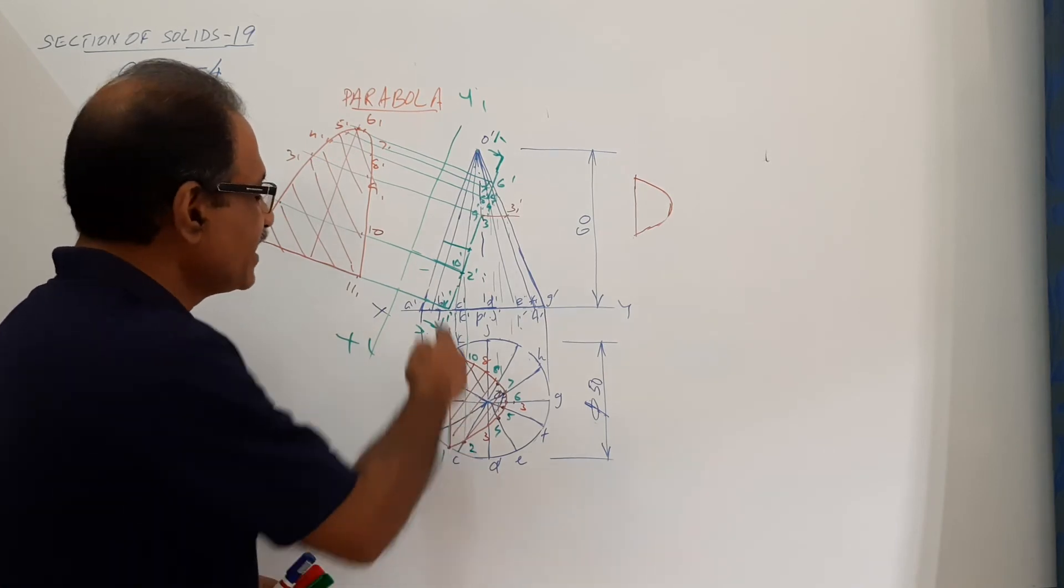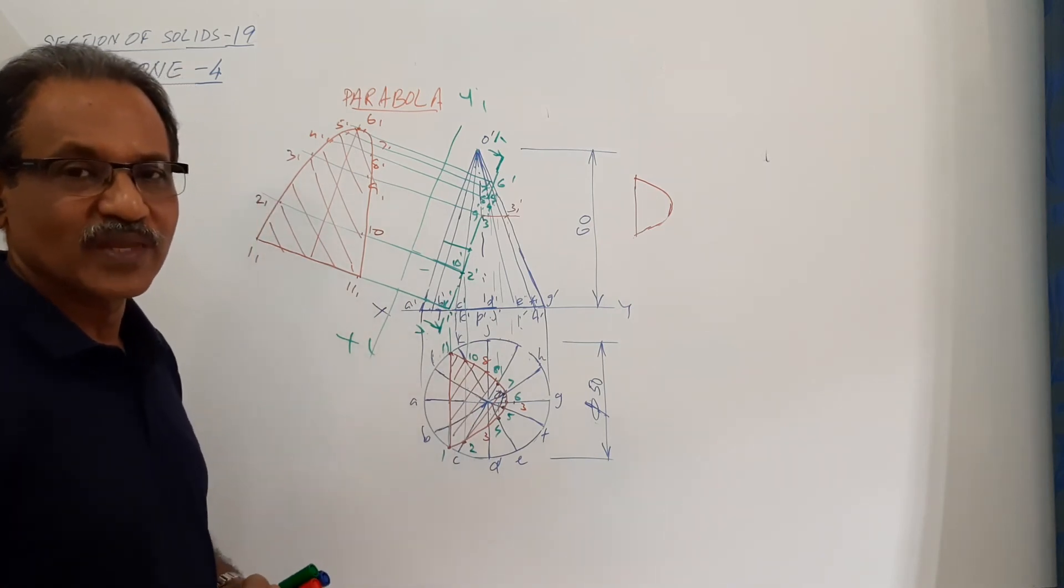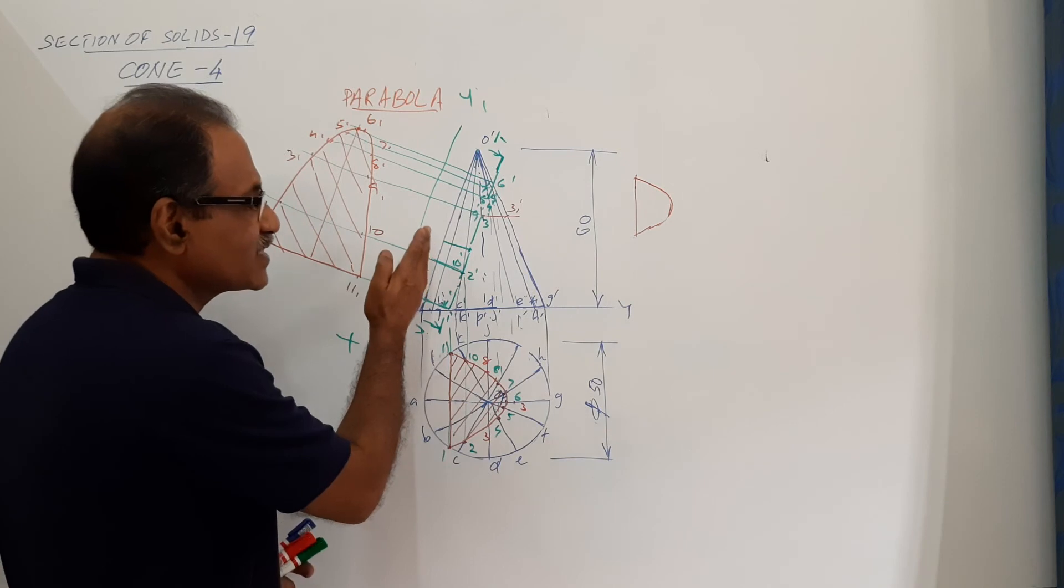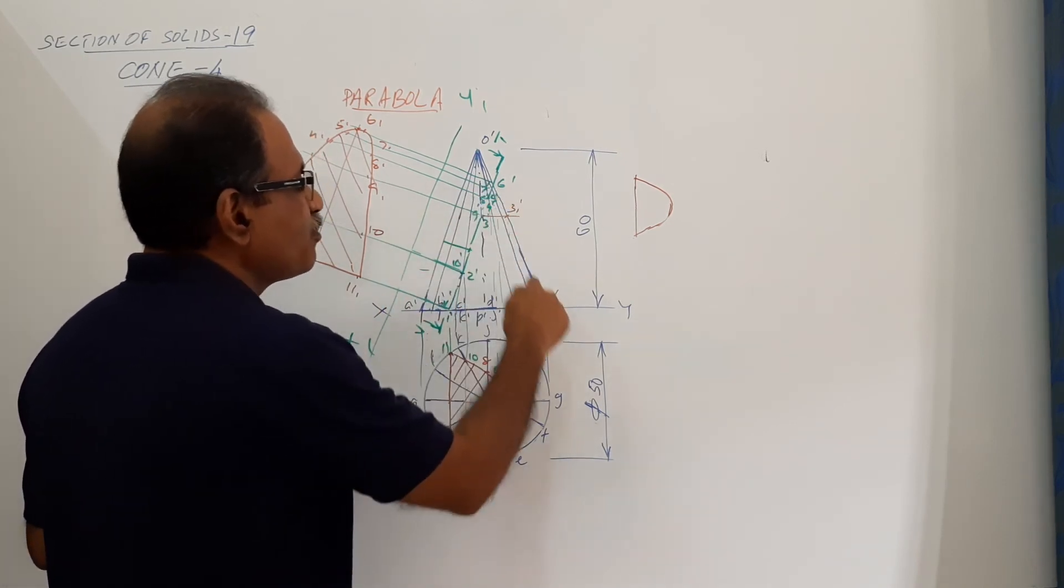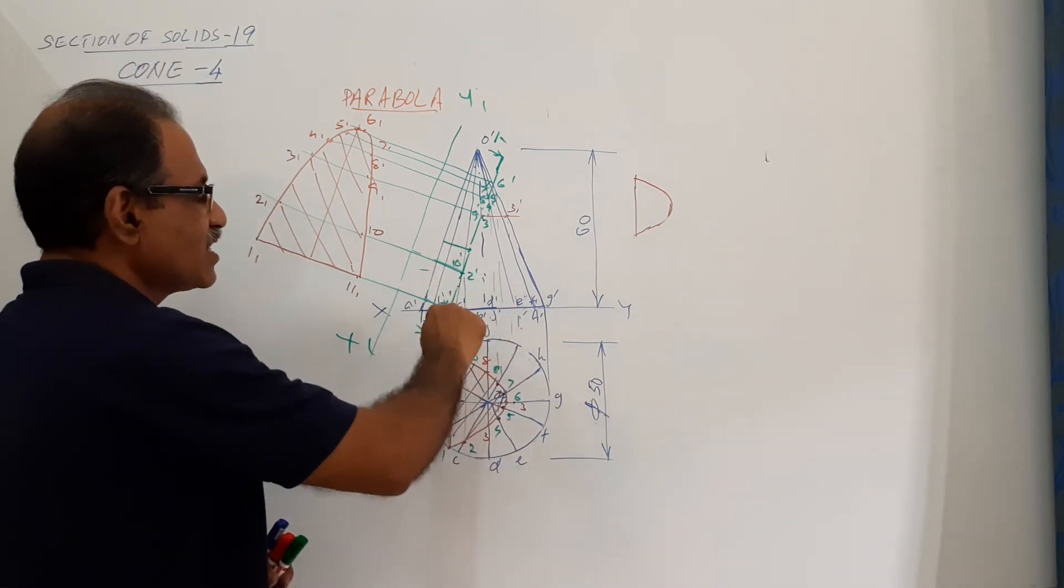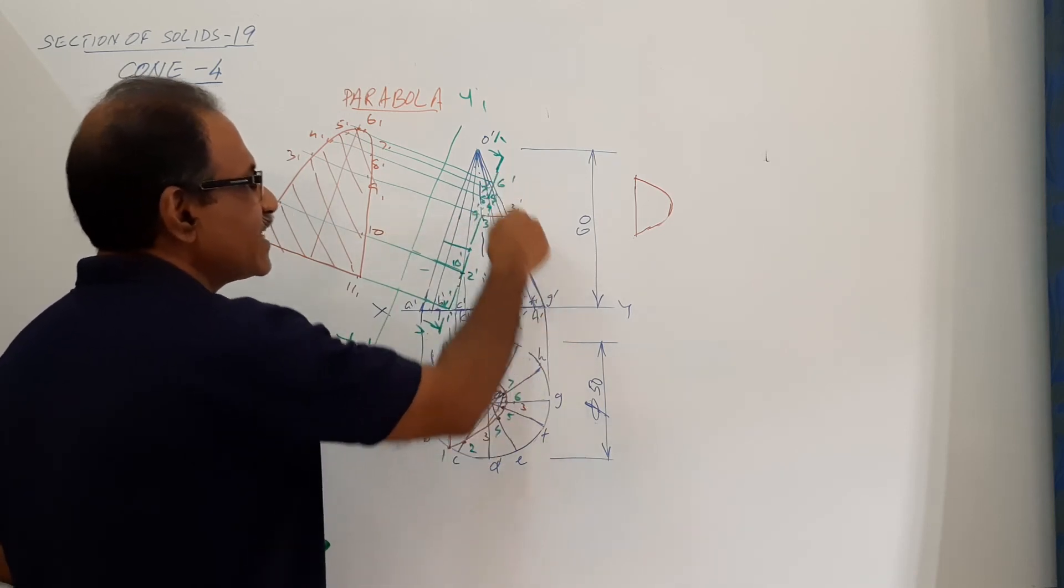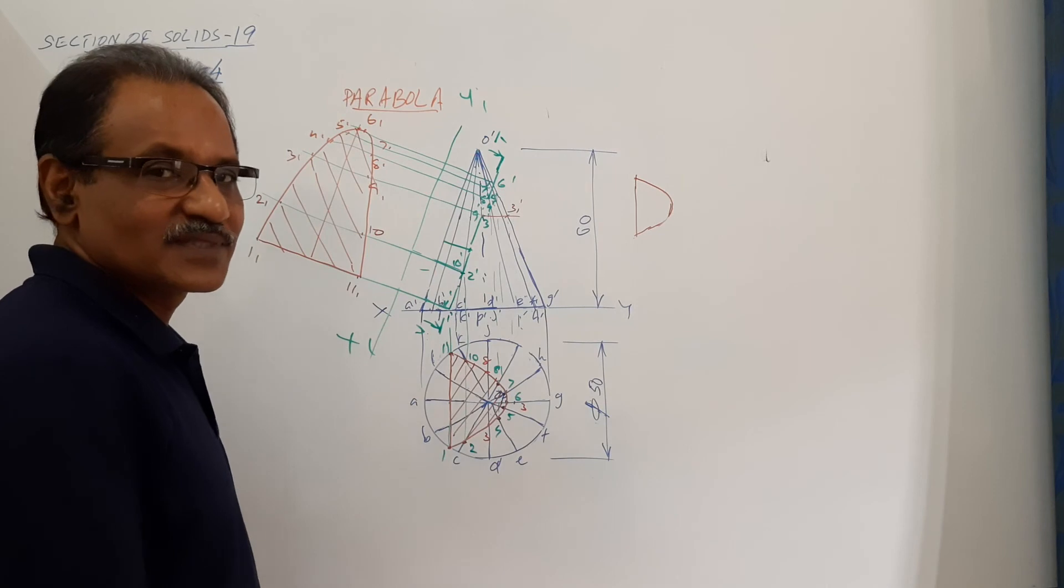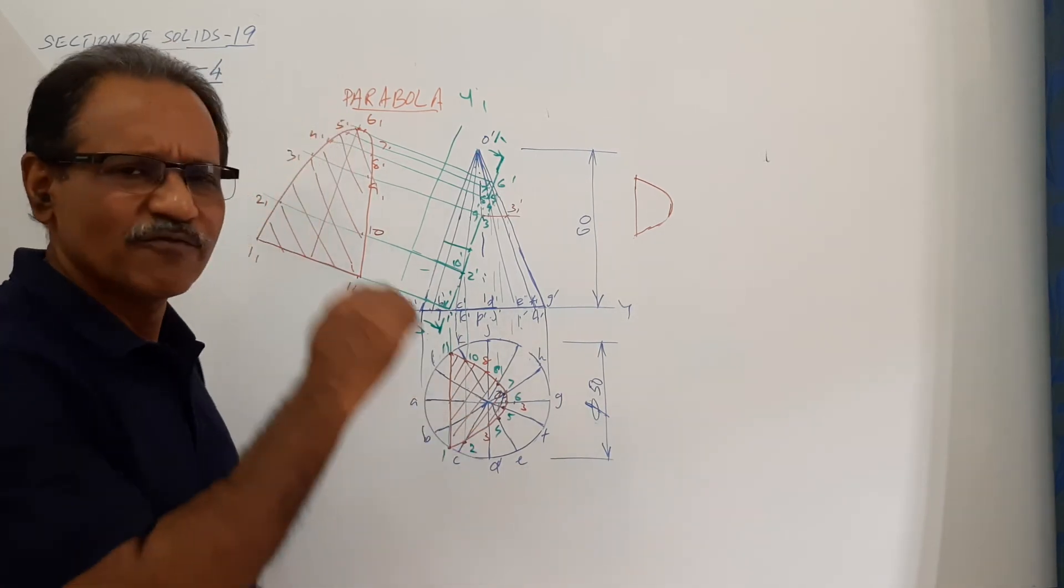How much is it? It is the length of the cutting plane. One thing you have to remember is when the cone is cut by a cutting plane parallel to the generator, the remaining part is an isosceles triangle. That means one dash six dash is the abscissa, and that is same as g dash six dash. One dash six dash is g dash six dash. There are indirect questions, that is why I mentioned this.